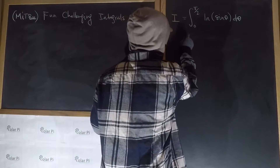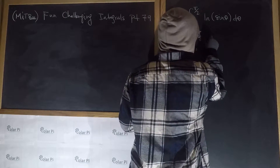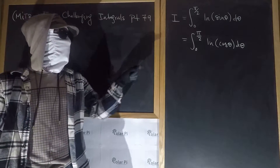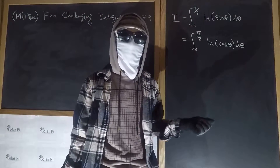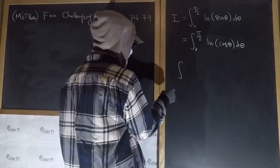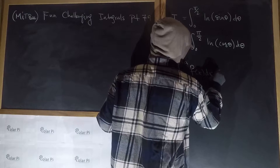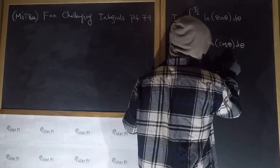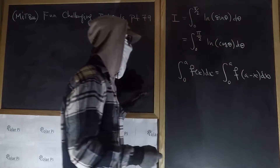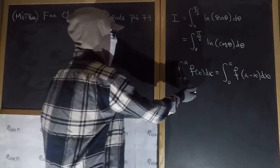We've called our given integral I, and I is equal to the integral from zero to π/2 of the natural log of cosine θ dθ. Why can we just change sine to cosine? We can use this property of integration: the integral from zero to a of f(x) dx is the same as the integral from zero to a of f(a − x) dx.